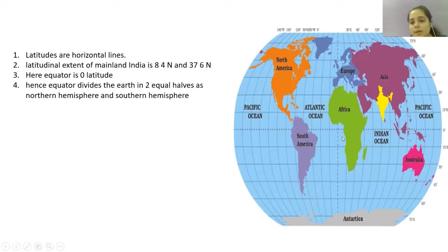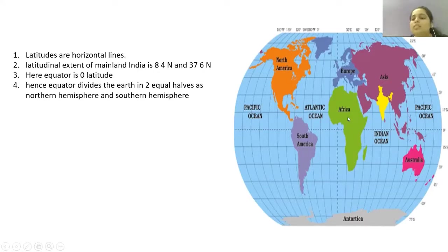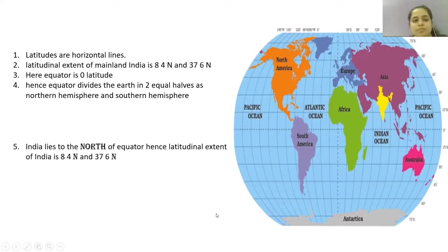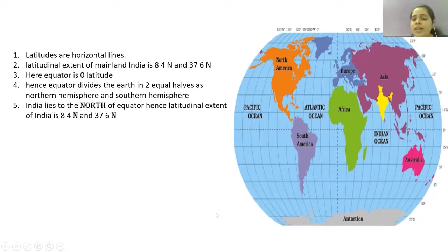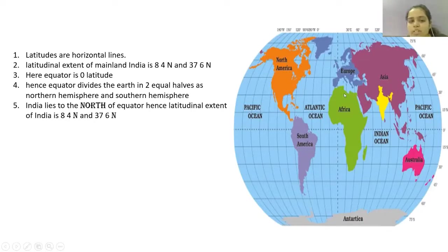The equator is 0 degree latitude, hence the equator divides the earth into two equal halves — that is the northern hemisphere and the southern hemisphere. India lies to the north of the equator, hence the latitudinal extent of India is 8 degrees 4 minutes North and 37 degrees 6 minutes North.